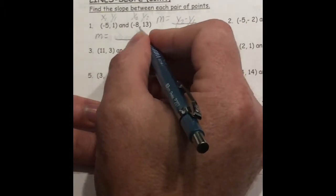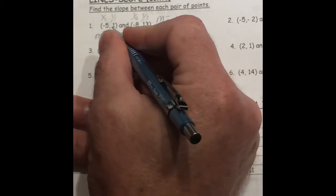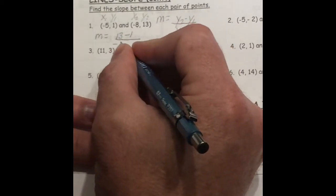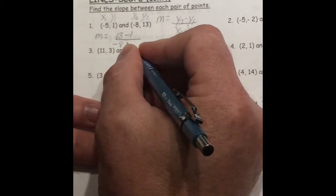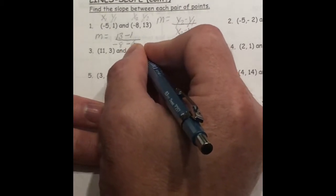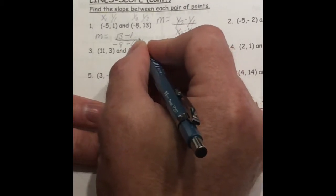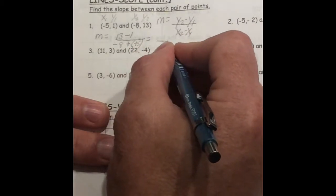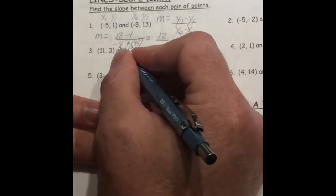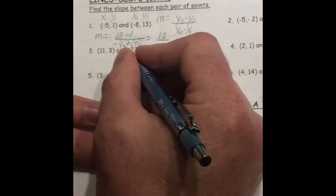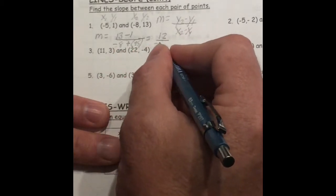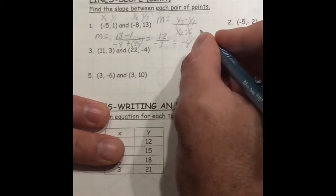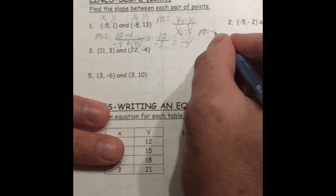So my second y, 13, minus my first y, 1. My second x, negative 8, minus my second y—minus negative 5—which, as you know, could be the same as plus 5 right there. And my top is a 12. My bottom, I got a negative 8 plus 5, that's negative 3. So the slope of this line is negative 4. So in this case, m equals negative 4. And I'm going to stop on that.